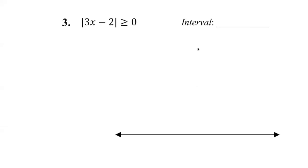We have absolute value of 3x minus 2 is greater than or equal to zero. Now, I'm going to say that there's something special with this inequality and see if you can spot it out. Pause the video and see if you can spot it out. If you cannot, then you can just follow along.